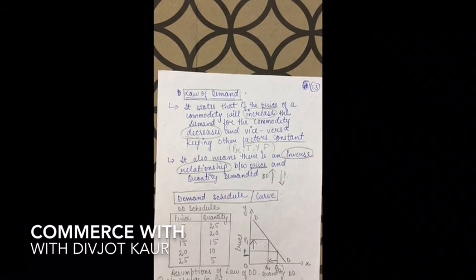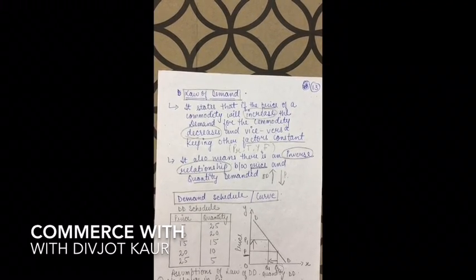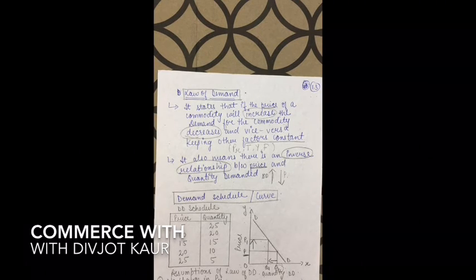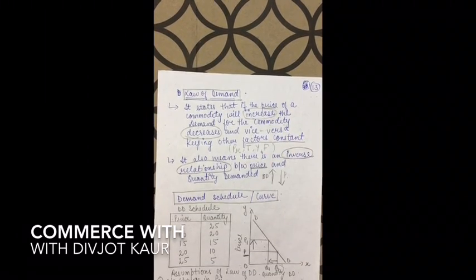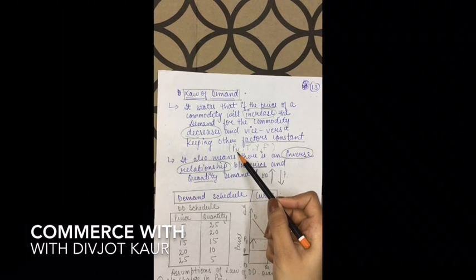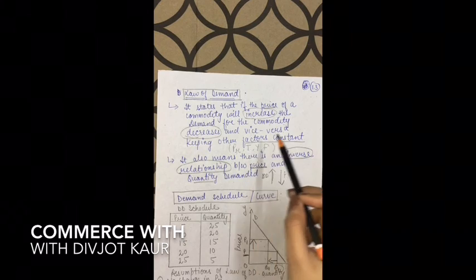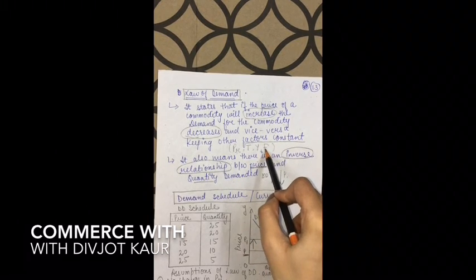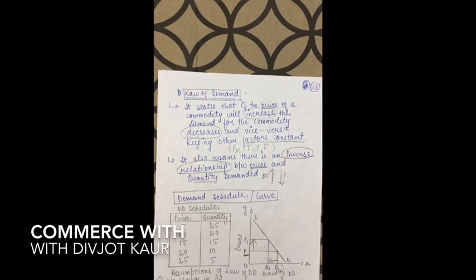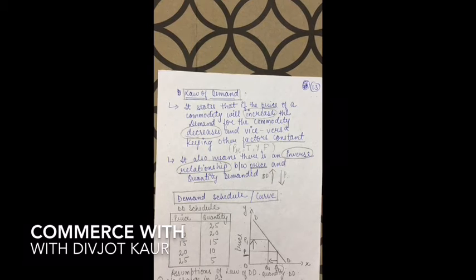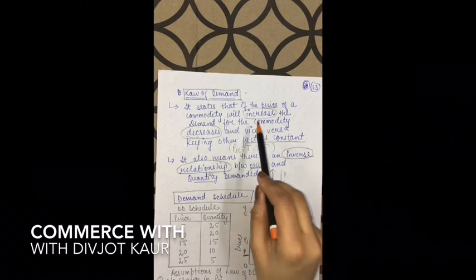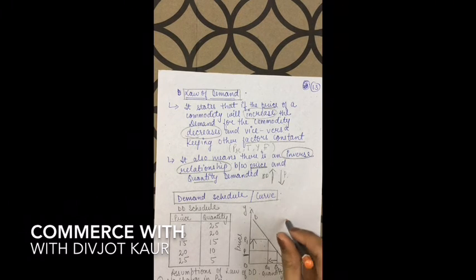The other factors that remain constant are: PR — price of the related goods; T — taste and preferences of the consumer; Y — income of the consumer; F — future expectations of prices. These all remain constant under the law of demand. Only the price of its own commodity affects demand under this law. For example, if biscuit price was 5 rupees and I was buying 20 packets, if price rises to 10 rupees, quantity demanded will fall to maybe 15 or 10.